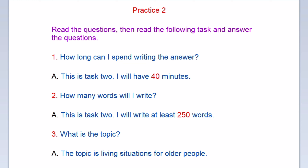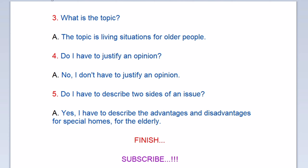Question three: What is the topic? The topic is living situations for older people. Question four: Do I have to justify an opinion? No, I don't have to justify an opinion. Question five: Do I have to describe two sides of an issue? Yes, I have to describe the advantages and disadvantages of special homes for the elderly.